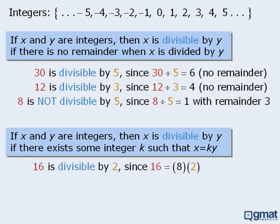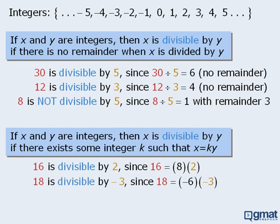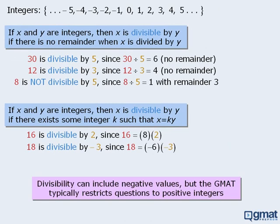For example, 16 is divisible by 2 since 16 can be expressed as 8 times 2 where 8 is an integer. Similarly, 18 is divisible by negative 3 since 18 can be expressed as negative 6 times negative 3 where negative 6 is an integer. Please keep in mind that although the concept of divisibility can be applied to all integers, the GMAT typically restricts divisibility questions to positive integers.